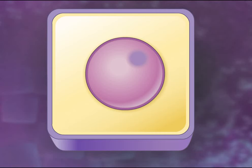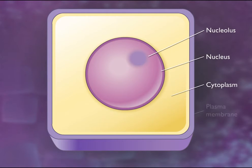Mitosis is a process of nuclear division by which replicated copies of a cell's DNA are organized into chromosomes. The identical copies of the DNA are then divided equally between two daughter cells.